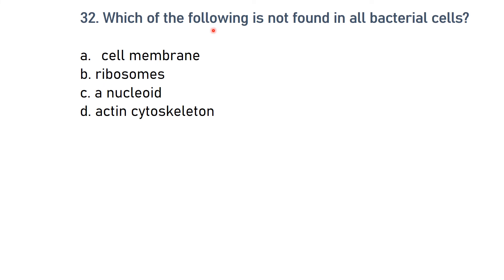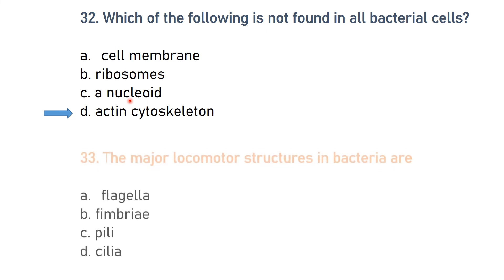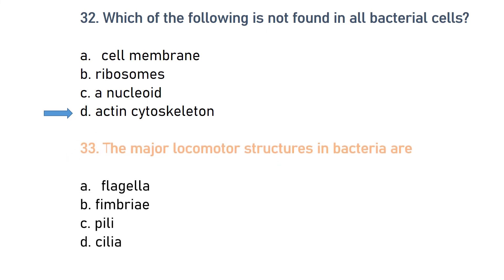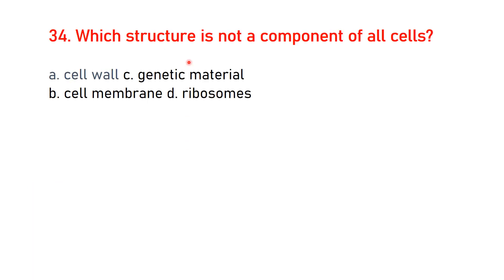Which of the following is not found in all bacterial cells? The major locomotor structure in bacteria is flagella. Which structure is not a component of all cells? The cell wall is not a component of all cells. Genetic material, cell membrane, and ribosomes are important components of both eukaryotic and prokaryotic cells.